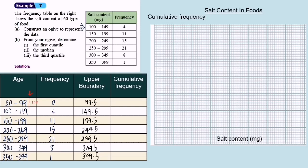Now we write the cumulative frequency. Cumulative frequency will accumulate all the frequency before. So here is 0. 4 plus 0 is 4. 11 plus 4 is 15. 15 plus 15 is 30. 21 plus 30 is 51. 8 plus 51 is 59. 1 plus 59 is 60.